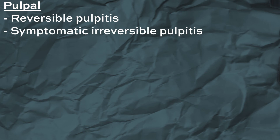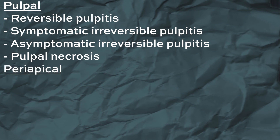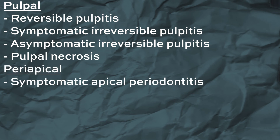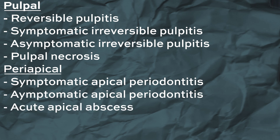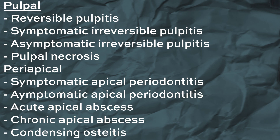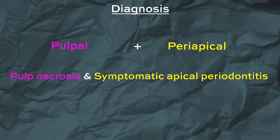So now we've covered all the pulpal diagnoses, which are: reversible pulpitis, symptomatic irreversible pulpitis, asymptomatic irreversible pulpitis, and pulpal necrosis; and the periapical diagnoses, which are: symptomatic apical periodontitis, asymptomatic apical periodontitis, acute apical abscess, chronic apical abscess, and condensing osteitis. It's important to note that when you provide a diagnosis for a tooth, you have to give both a pulpal diagnosis and a periapical diagnosis. For example, you might say pulp necrosis and symptomatic apical periodontitis of the upper left six.